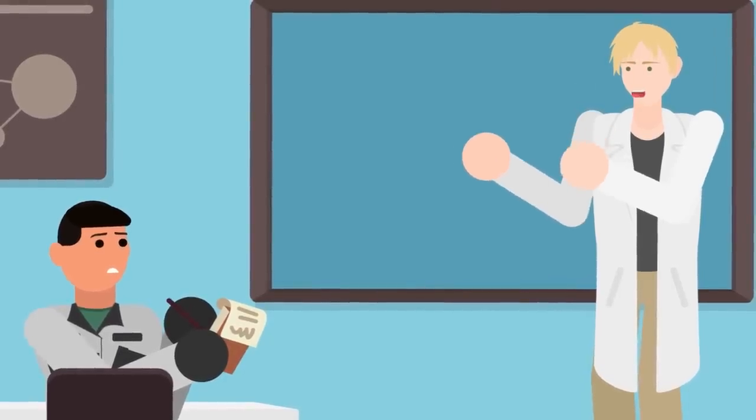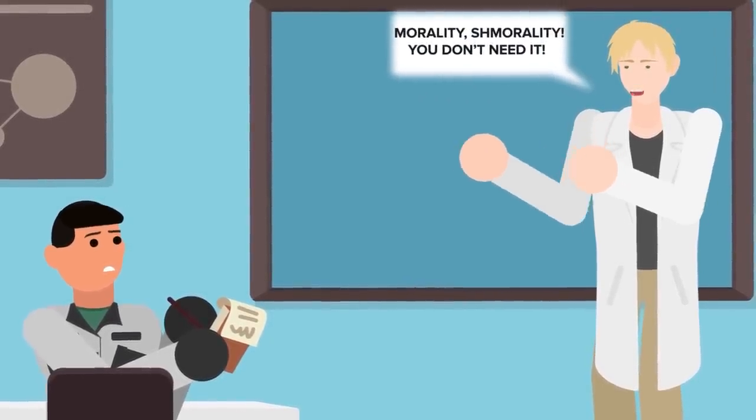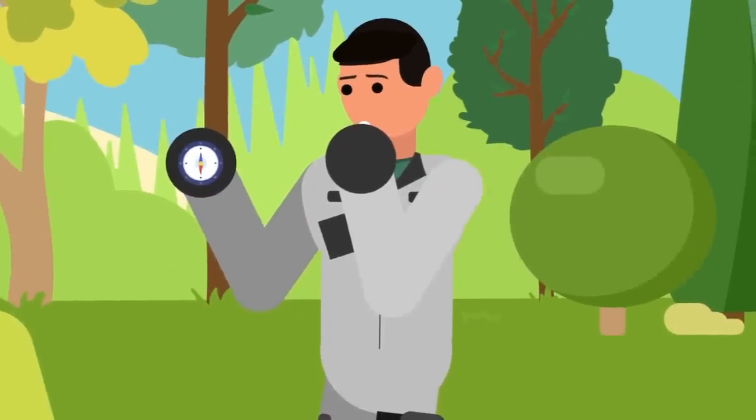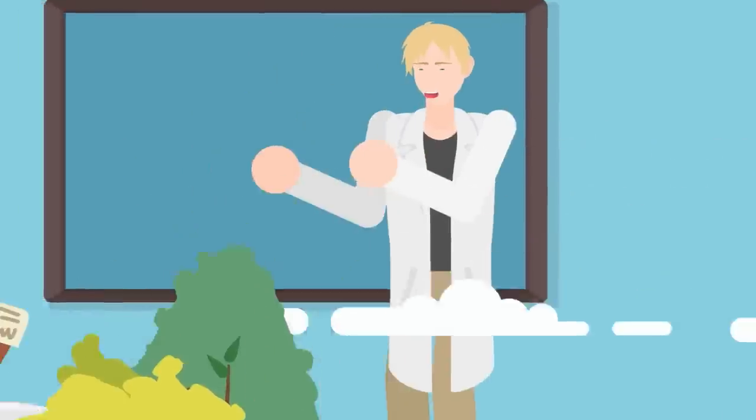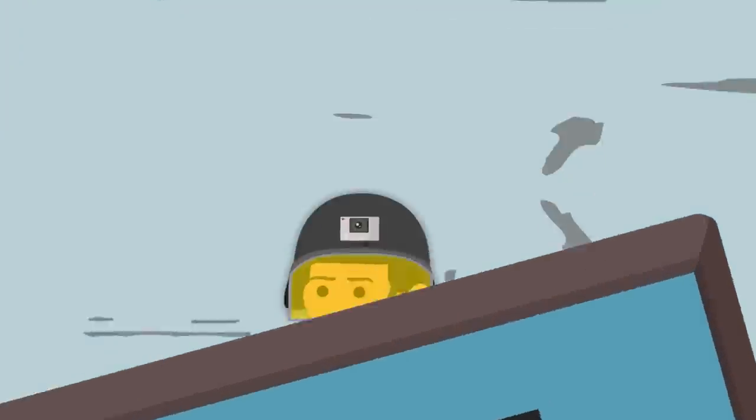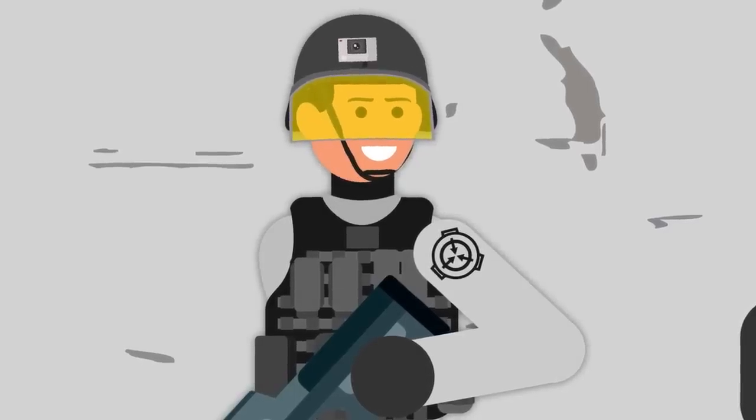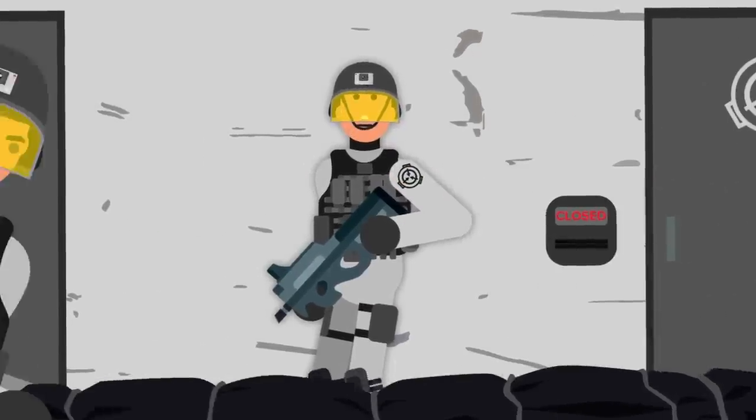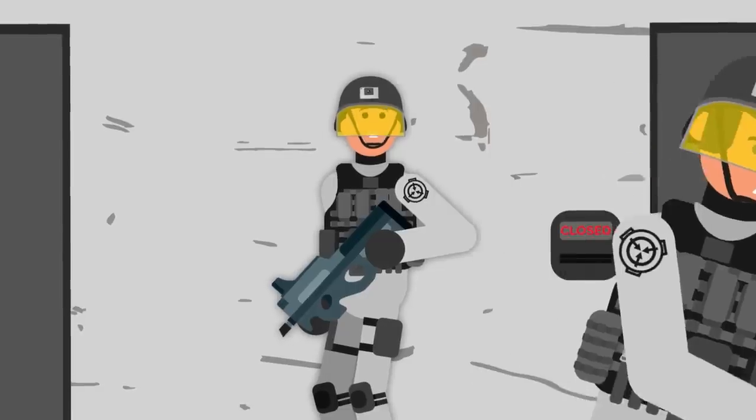Morality tends to get lost very quickly when you start working at the SCP Foundation. During the whirlwind of basic training, site orientation, and learning the difference between Euclid, Keter, and Thaumiel object classes, you'll have to make peace with the fact that, as a new member of Foundation staff, you'll probably end up having to turn a blind eye to doing some morally compromising things.